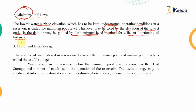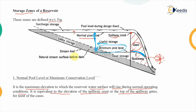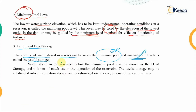The next storage terms are useful storage and dead storage. The volume of water stored between the minimum pool level and the normal pool level is the amount that can actually be used, and it is therefore known as the useful storage. In the figure, this difference between the minimum pool level and the normal pool level represents the useful storage.